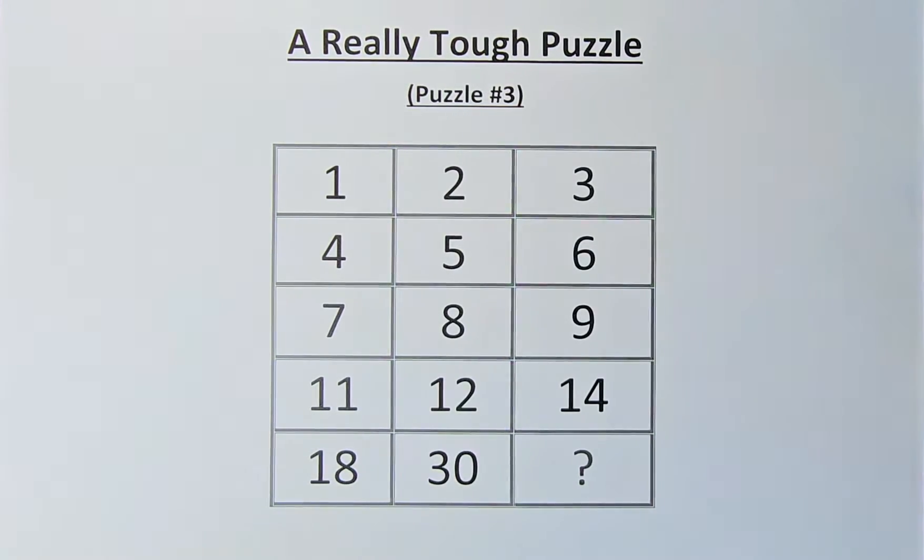In the fourth row, we have 11, 12 and 14. And in the final row, we have 18, 30 and a question mark.